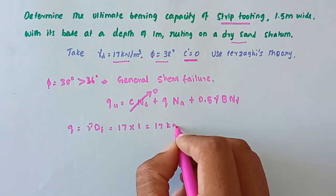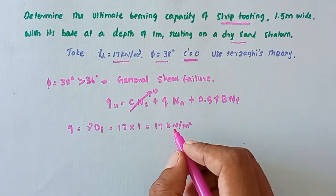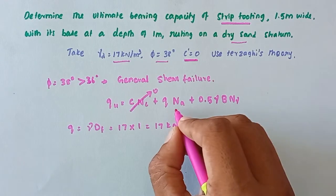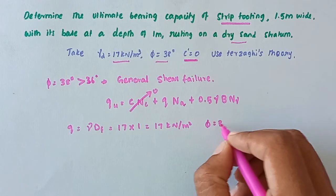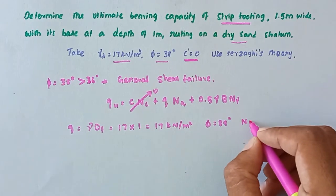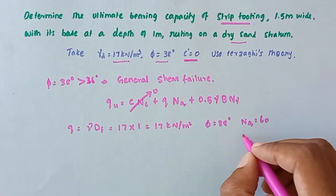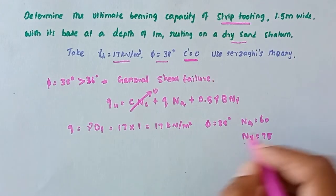Now we can take Nq value and Nγ value from the table. So φ = 38°, so Nq = 60 and Nγ = 75. So